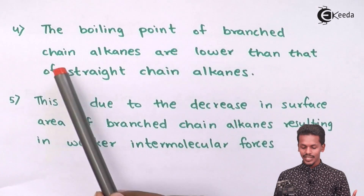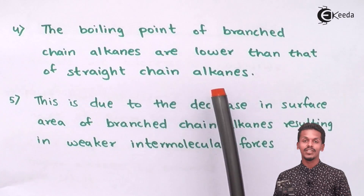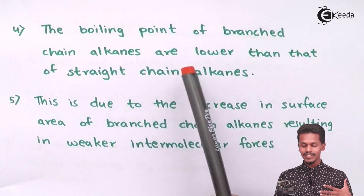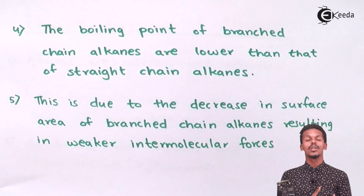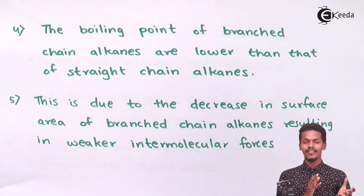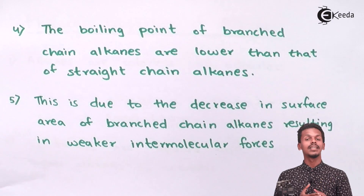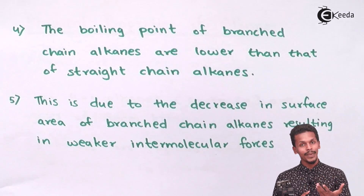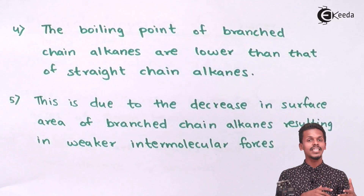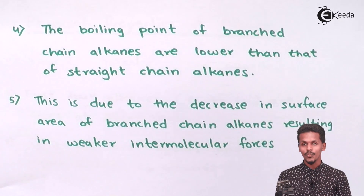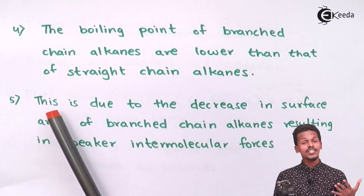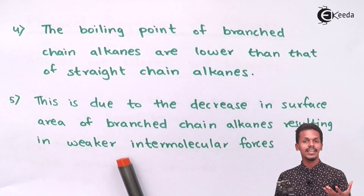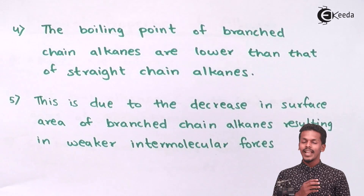The boiling point of branched chain alkanes is lower than that of straight chain alkanes. For example, if we have isomers like isobutane and n-butane, both have the same molecular formula but different physical properties. This difference in boiling point is due to the decrease in surface area of branched chain alkanes, resulting in weaker intermolecular forces of attraction between them.